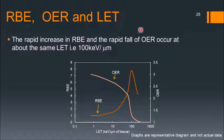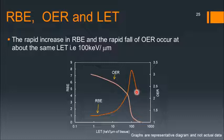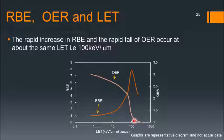We will now compare RBE, OER, and LET. As LET increases, RBE increases to a maximum and then decreases. It is exactly the opposite for the oxygen effect — as LET increases, the OER decreases. For low LET radiation like x-rays there is a strong oxygen effect, but for high LET radiation the OER is much less. So OER is lower for high LET, whereas RBE is higher, reaching its maximum at 100 keV/μm.